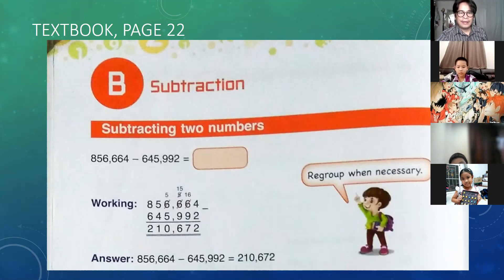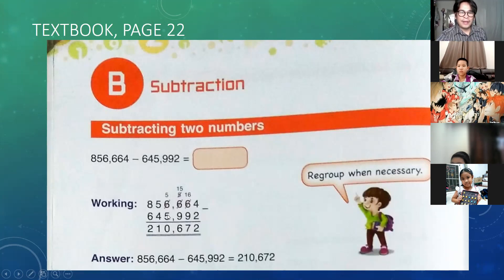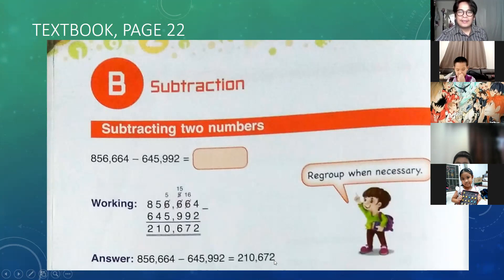5 minus 6 cannot be subtracted, so 5 becomes 15 — we borrow from 6, so 6 becomes 5. 15 minus 9 equals 6. Then 5 minus 5 equals 0, 5 minus 4 equals 1, and 8 minus 6 equals 2. The answer is 210,672.